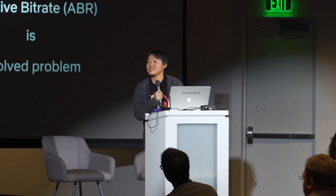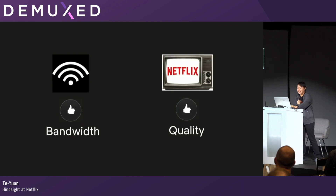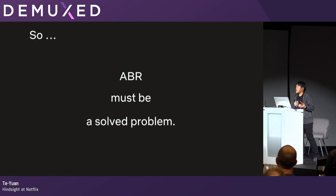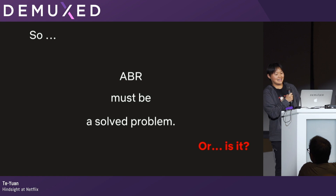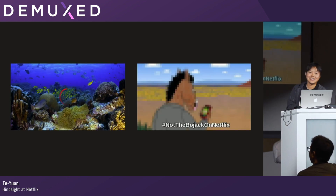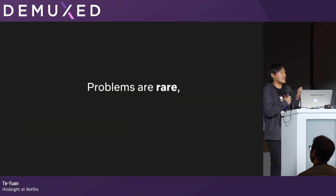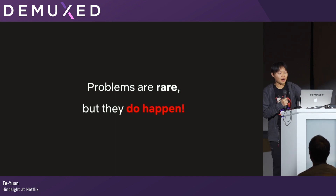As an ABR engineer, I hear this comment a lot: that ABR is a solved problem. Most people have great bandwidth, and most services provide decent playback experience, so ABR must be a solved problem. Or is it? Remember that one time you got the free buffer, and that other time you got the pixelated video quality? These problems are arguably rare, but they do happen, and that's a problem.